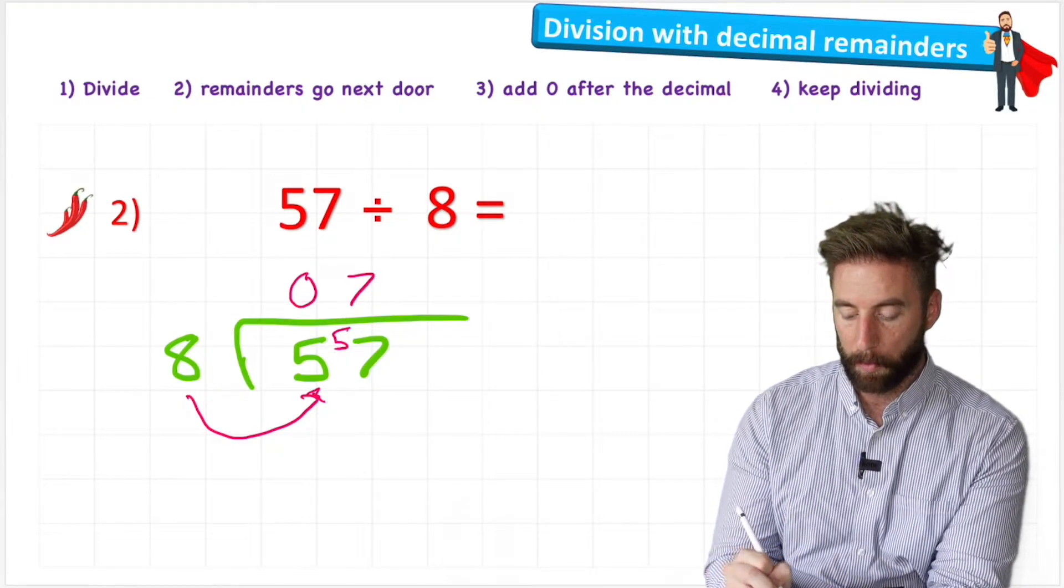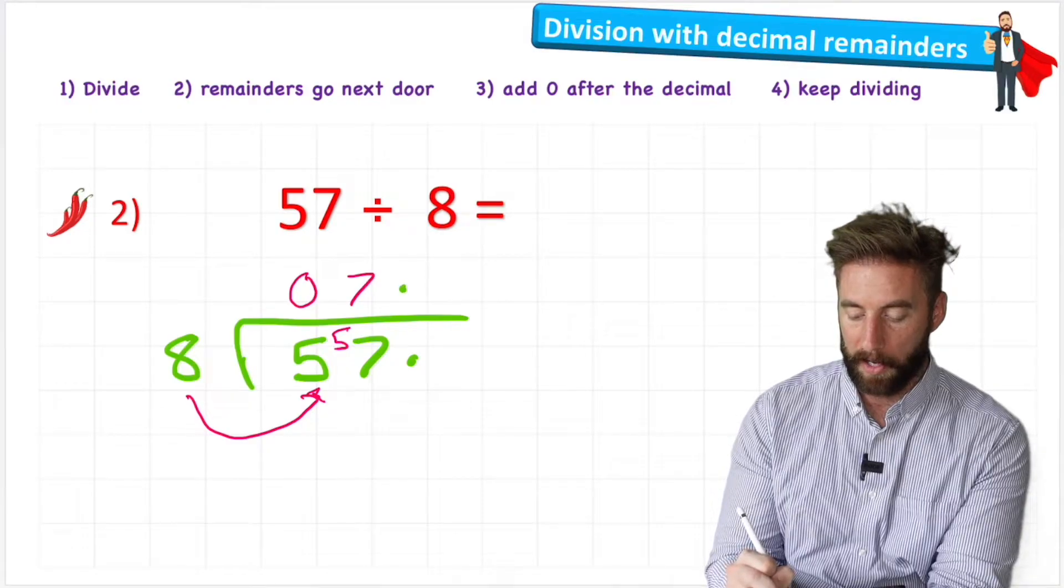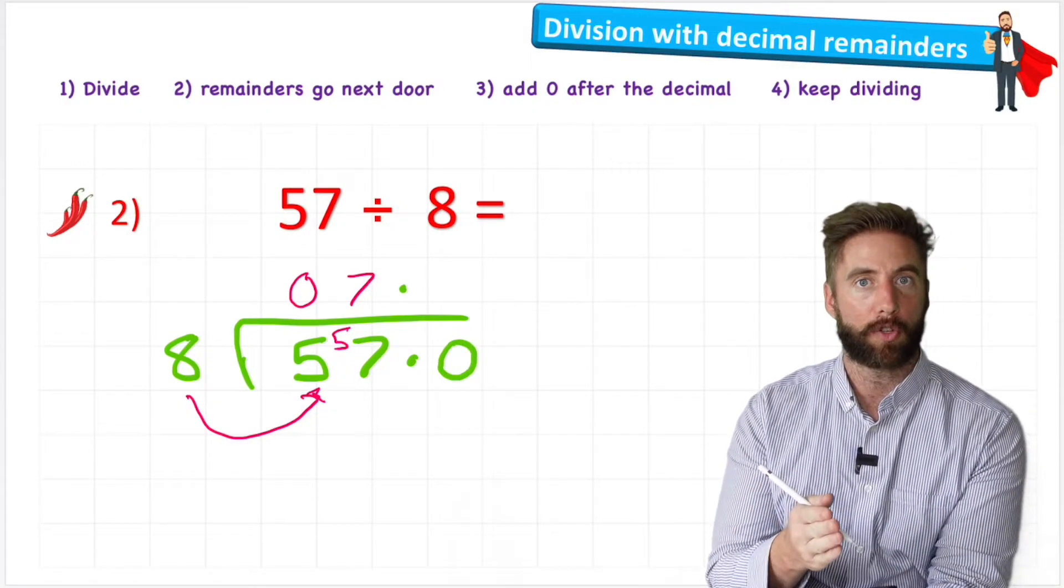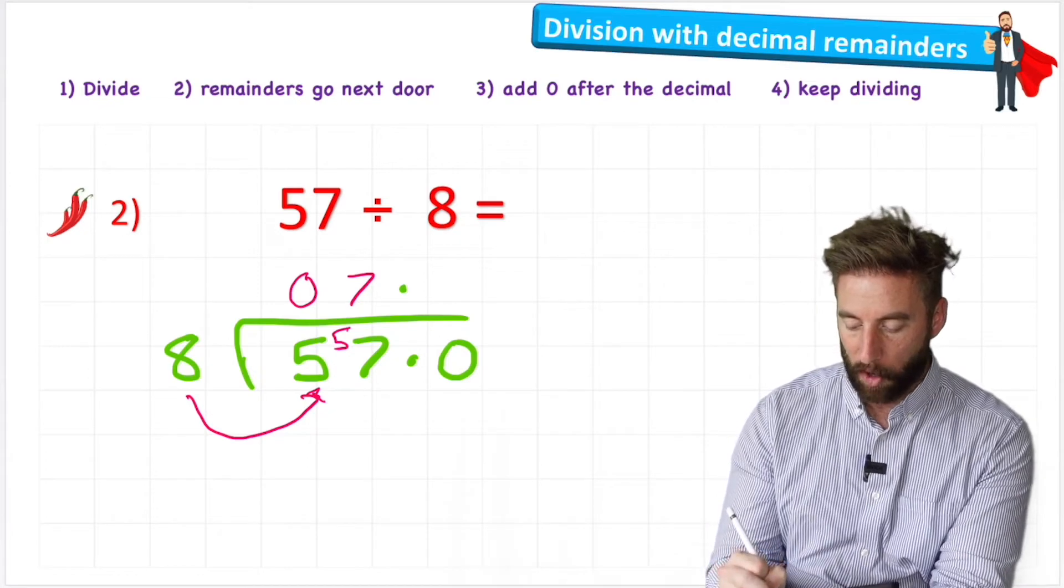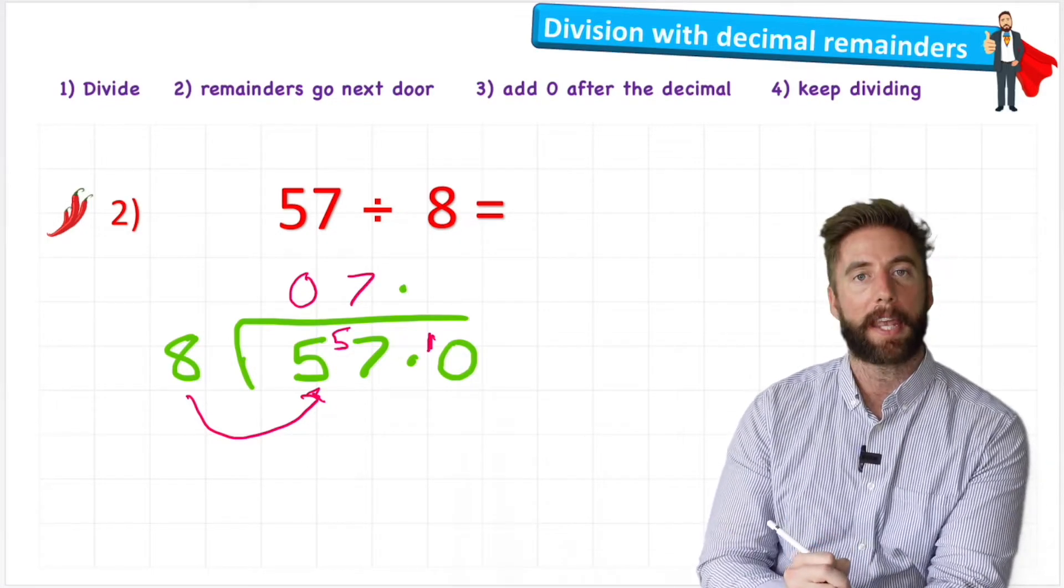I'm going to put my decimal in place on both lines. And I'm going to put a zero. And now I can just put that remainder one into my 10th column in front of the zero, making it a 10.